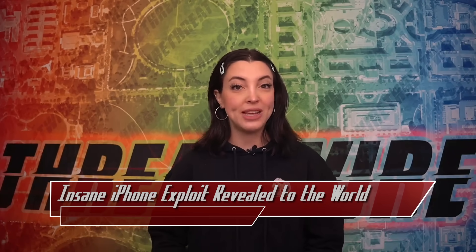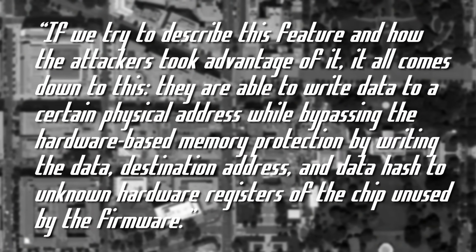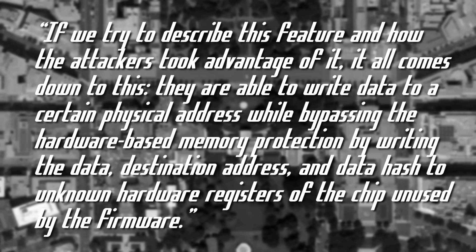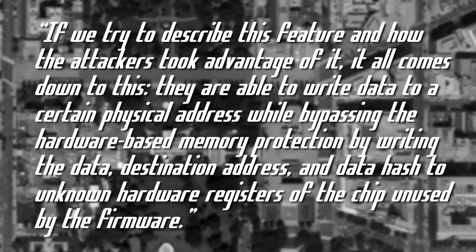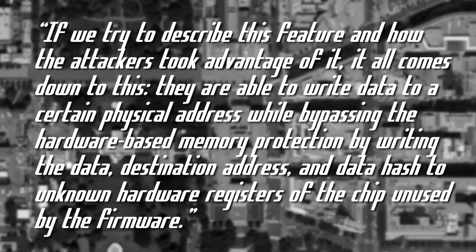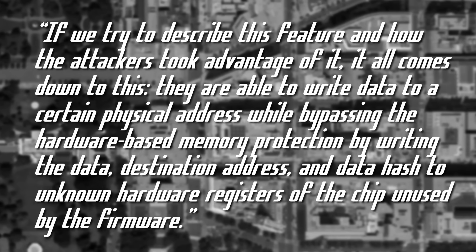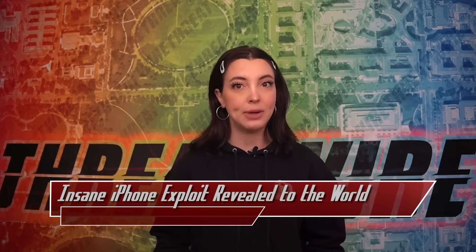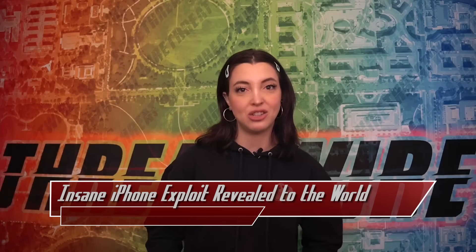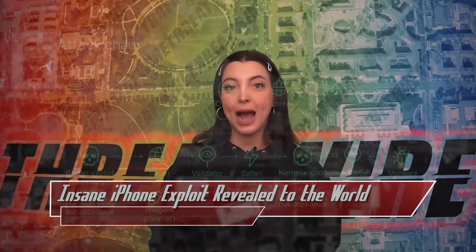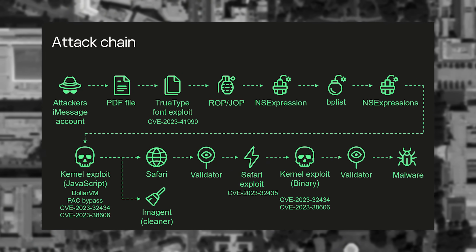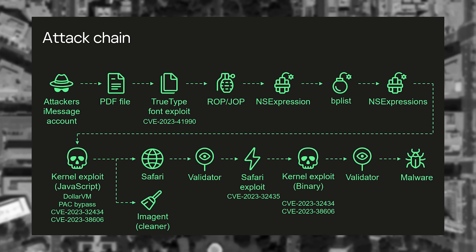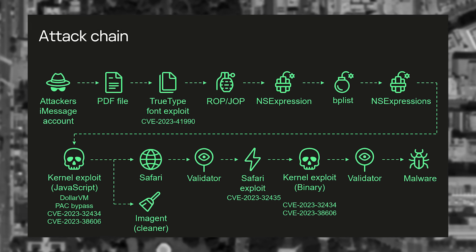In the team's formal write-up, they state: they are able to write data to a certain physical address while bypassing the hardware-based memory protection by writing the data, destination address, and data hash to unknown hardware registers of the chip unused by the firmware. To summarize what happens, a PDF sent via iMessage takes advantage of a font created by Apple. The exploit then uses return-oriented programming and jump-oriented programming, kernel manipulation, memory corruption, and Safari vulnerabilities to get root access and install malware.